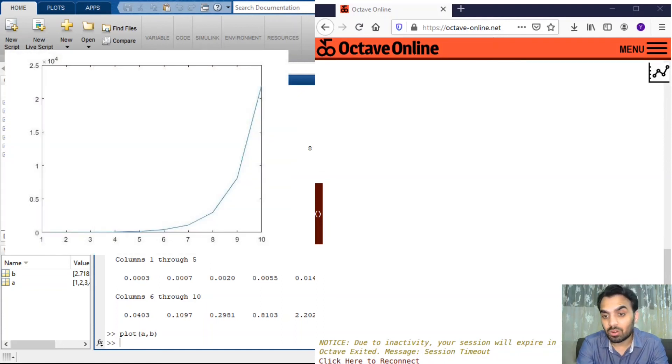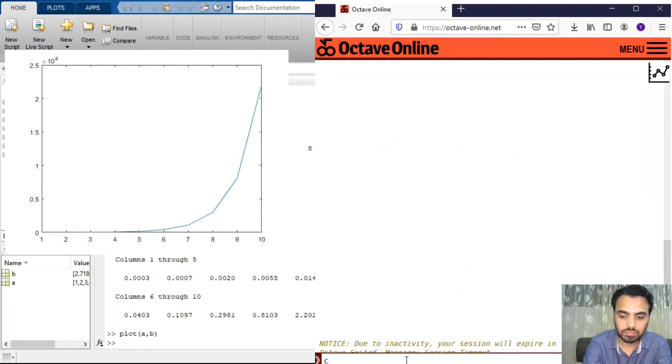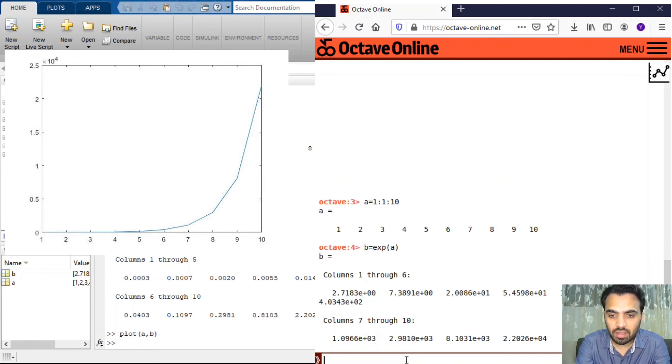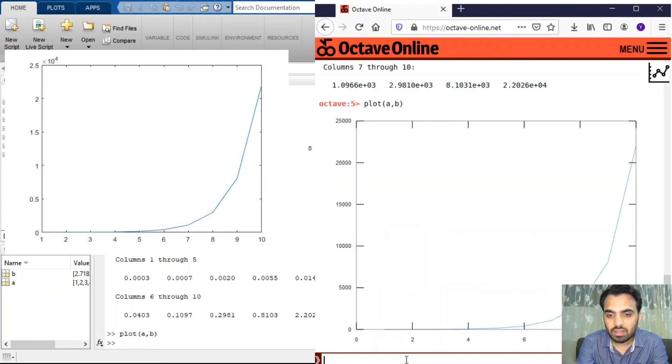So let's do this stuff on Octave. In Octave let us define the variable a again, one with an increment of one to ten, and then b is simply exponential of a, and then we're going to plot a comma b and here we have the plot. Both the plots are exactly identical and this makes my point that you can use Octave as an alternate for MATLAB.